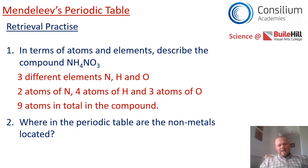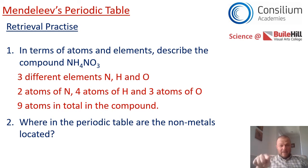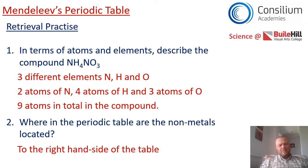Where in the Periodic Table are the non-metal elements located? If you remember the work we did in the last lesson, there was a line between boron and aluminium, and it caused a kind of step down, which split the Periodic Table into two sections. So where are the non-metal elements — to the left or right of that line? Well, they're to the right of that line. The non-metals are to the right-hand side of the Periodic Table. Well done if you got that right.